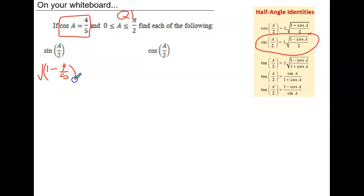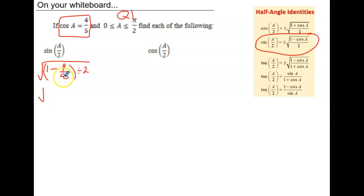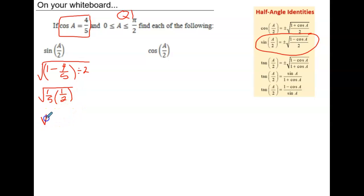That is all divided by 2, under the square root. We're using the positive square root as opposed to the negative square root because our angle is in quadrant 1, where everything is positive. Simplifying 1 minus 4 fifths, we need a common denominator of 5, so 5 fifths minus 4 fifths is 1 fifth. Dividing by 2 is the same as multiplying by the reciprocal, 1 half. Under our square root we have 1 times 1, which is 1 in the numerator, and 5 times 2 is 10 in the denominator.